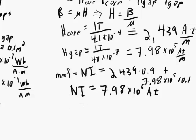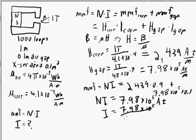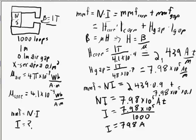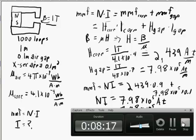Now we can put these numbers back into the MMF equation: 2,439 times 0.9 plus 7.98 times 10 to the fifth times 0.1 meters. We get N times I equal to 7.98 times 10 to the fifth amp-turns. We know N is 1,000 loops, so the current equals 7.98 times 10 to the fifth divided by 1,000, giving us 798 amps. So in order to create a flux density of 1 tesla in this system — with 1,000 loops of wire, a total length of 1 meter, and an air gap of 0.1 meters — we need a current of 798 amps.